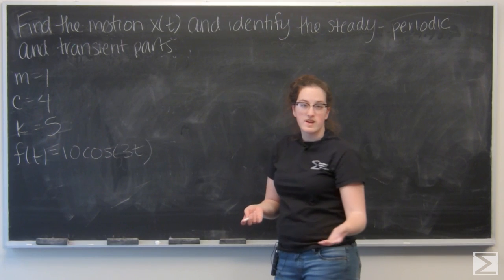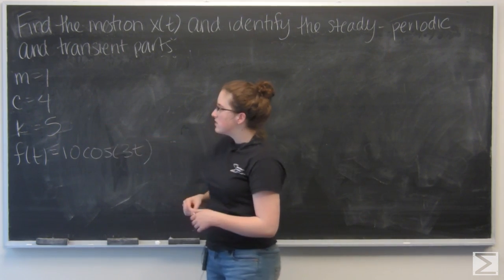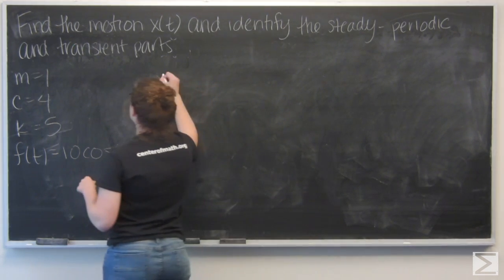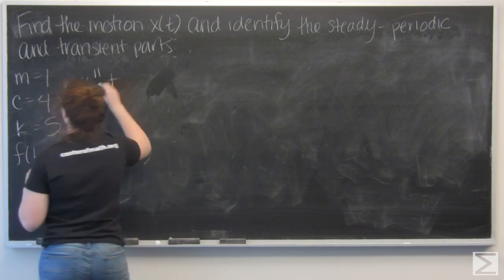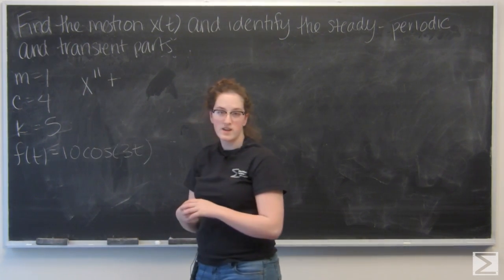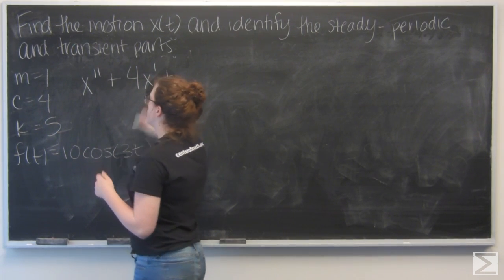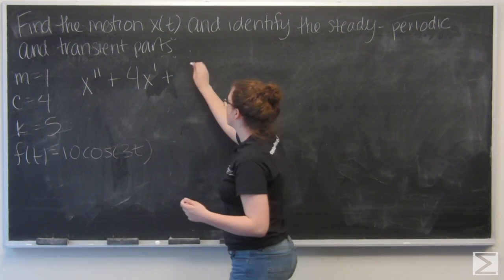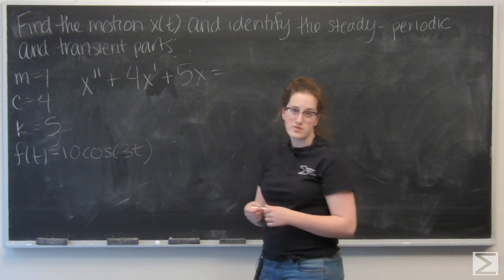So let's go ahead and write the second order system that goes with these given coefficients. So I've got mx double prime plus cx prime, so 4x prime, plus kx, so 5 equals f(t), so 10 cosine of 3t.